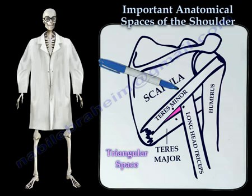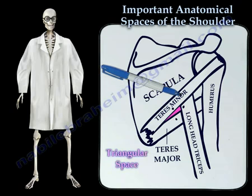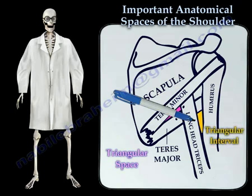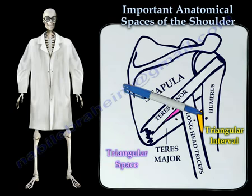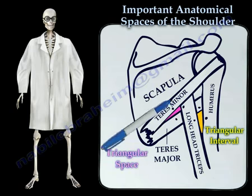The triangular interval has boundaries which include the long head of the triceps, the humeral shaft, and the teres major.